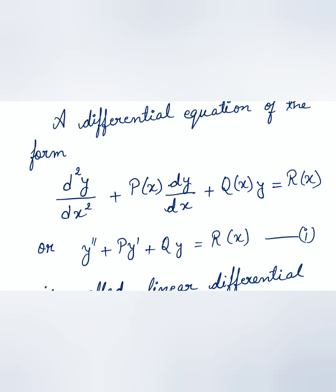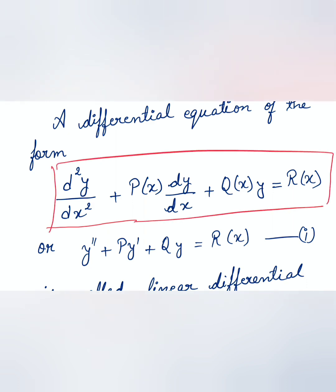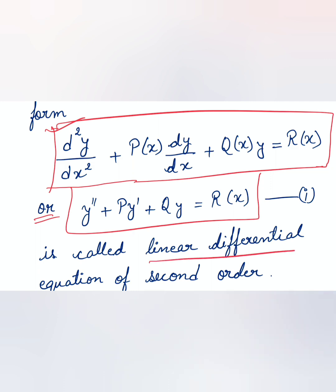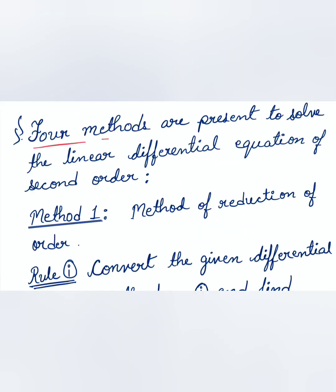For discussing solving differential equations by reducing their order, we consider a differential equation of the form: d²y/dx² + P(x) dy/dx + Q(x)y = R(x), or written as y'' + Py' + Qy = R(x). This is called a linear differential equation of second order — let us name it equation 1.